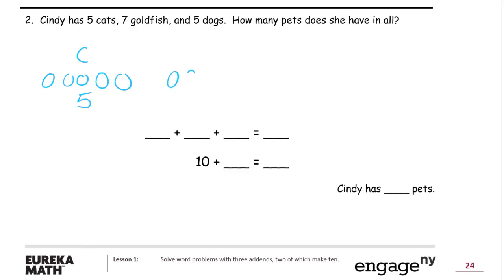Goldfish. One, two, three, four, five, six, seven. Goldfish, or G. She's got a lot of pets. Five cats and five dogs. All right, these are dogs.